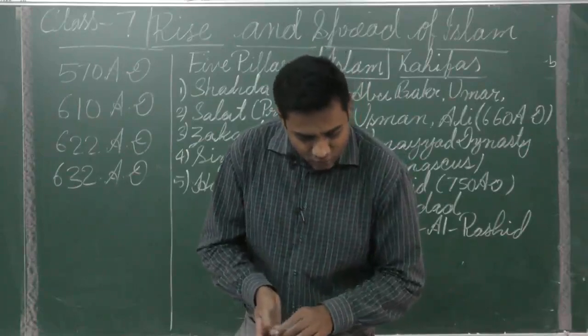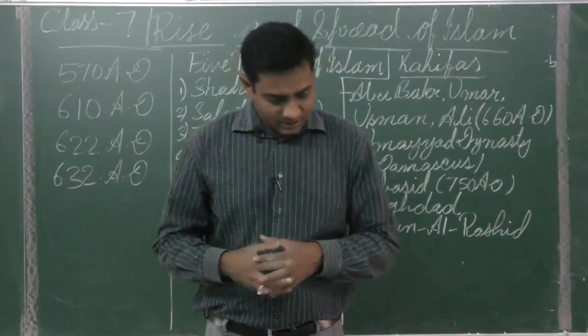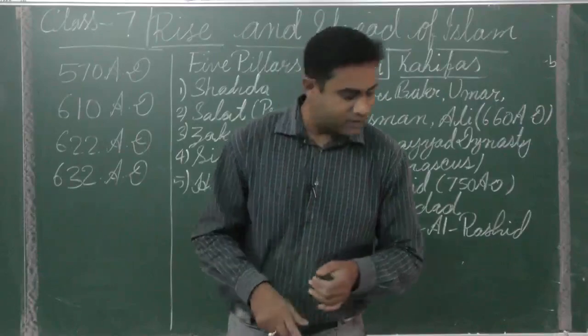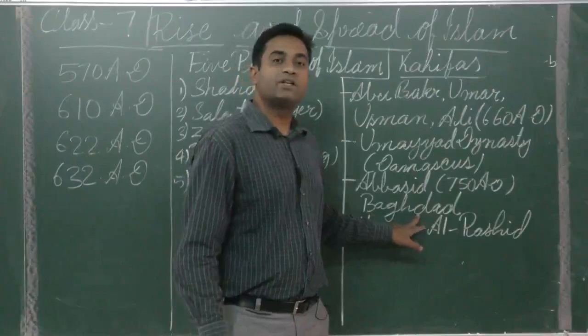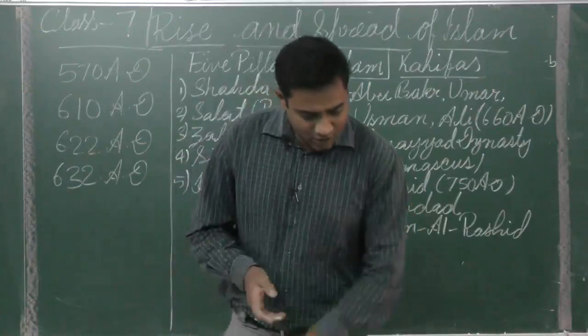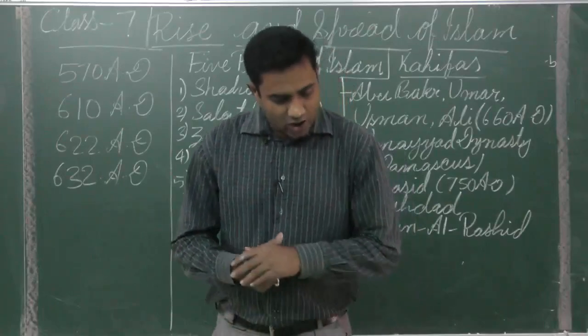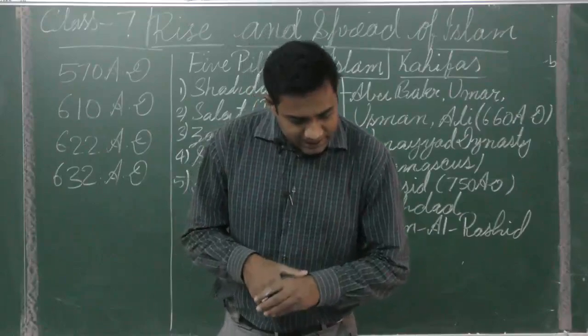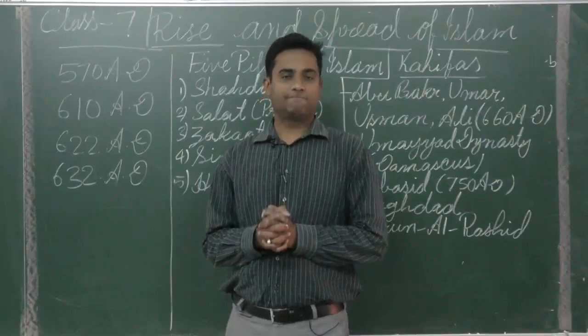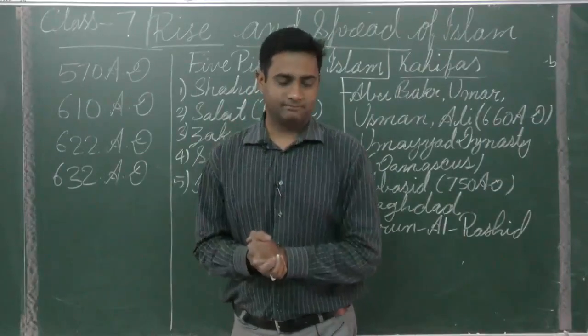Next, the Abbasids established their capital at Baghdad. So Baghdad will be the correct answer. When did the rule of Ottoman Khalifa end? Actually Ottoman Khalifa's rule ended in 1453, then after the Turks started to rule.